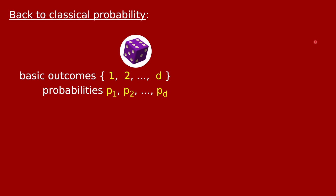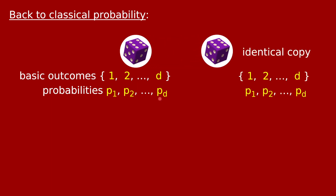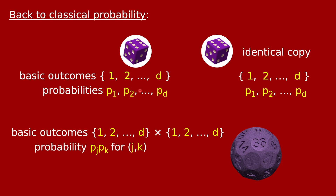Let's go back to classical probability for a moment. Imagine you have one die with d outcomes and probabilities p1 through pd. Now suppose you had an identical copy of this classical die — so two copies of this probability distribution. A good mathematical way to think about these two dice is collectively as one joint source of randomness. The set of basic outcomes is all pairs jk between 1 and d, and the probability of seeing a particular pair jk is pj times pk. This is just another classical source of randomness with d-squared basic outcomes — like a d-squared-sided die.